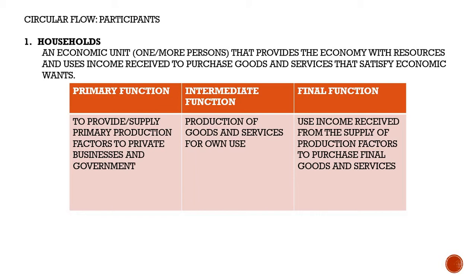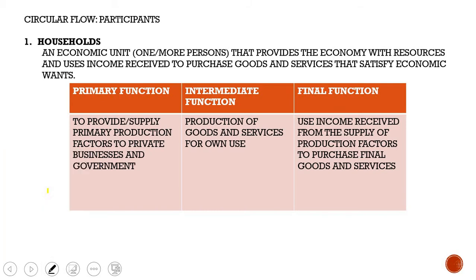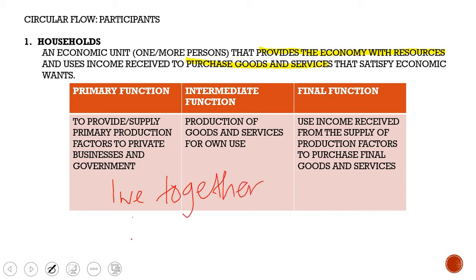We're going to start off with households. A household is an economic unit that consists of one or more persons that provides the economy with resources, and it uses income received to purchase goods and services that satisfies economic wants. A household may consist of one person, a family, or a group of people that live together and depend on a common income.